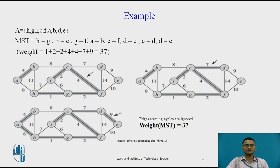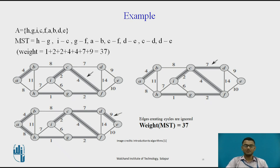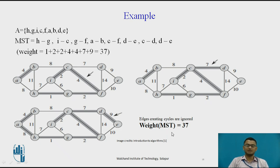After all the nodes have been traversed — that is, spanned — we conclude that our minimum spanning tree has a total weight of 37, which includes all the nodes. As you can see, we have spanned all the nodes, and the minimum weight of the spanning tree is 37.